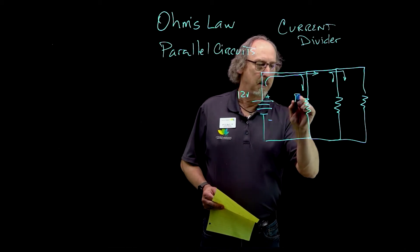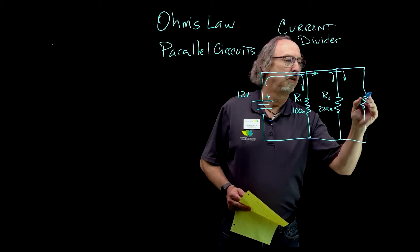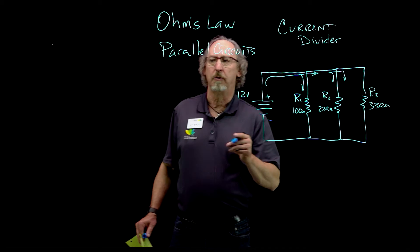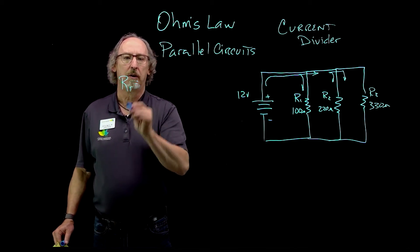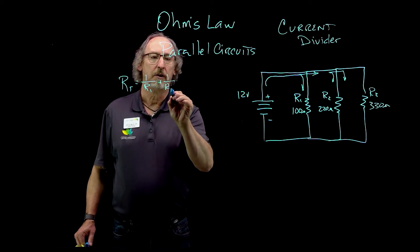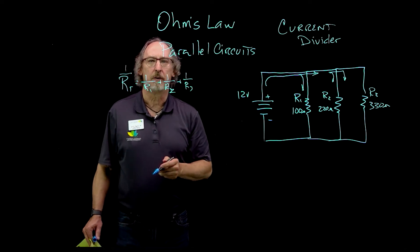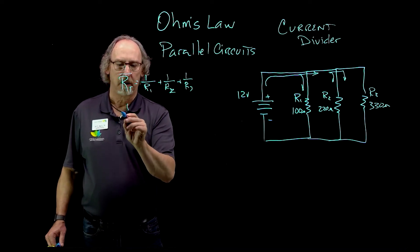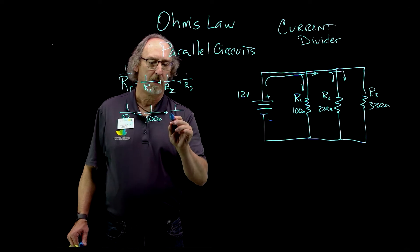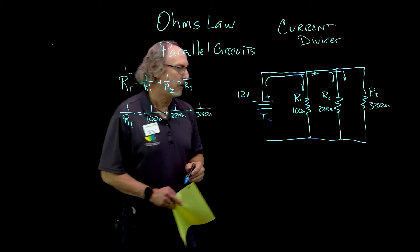If I apply some values to it — 100 ohms, 220 ohms, 330 ohms — the first thing I want to do is calculate my total resistance. Total resistance in a parallel circuit, you have to take the inverse of the sum of inverses — for two, three, or more resistors — and then take the inverse of that answer. Applying our values: 100 ohms, 220 ohms, 330 ohms, and calculate that on your calculator.